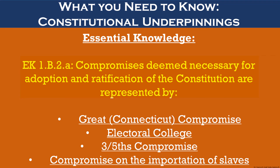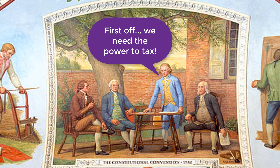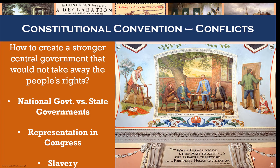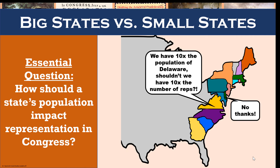For your exam, you will need to know the compromises that were made to create the U.S. Constitution. All of the delegates agreed that the federal government needed the power to tax, and we'll look at that in upcoming lectures. Some issues were contentious: how do you create a stronger national government without interfering with state sovereignty? How would representation in Congress be decided? And what were they going to do about slavery?